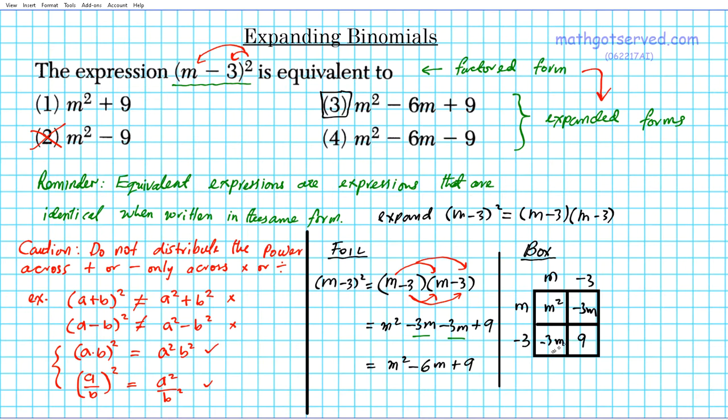So look for identical terms to combine. If you look at this diagonal right here, negative three m and negative three m are identical. So you combine those two. So your answer is gonna be m squared, the terms inside your multiplication grid. Minus three minus three add them together, negative six m, plus nine.